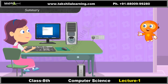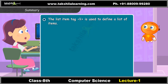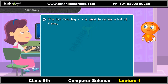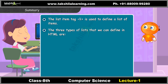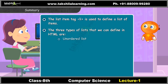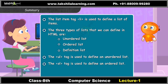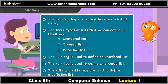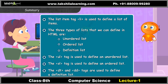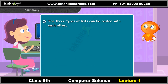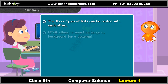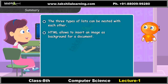Let's summarize what we learned in this unit. The list item tag LI is used to define a list of items. The three types of lists we can define in HTML are: unordered list, ordered list, and definition list. The UL tag is used to define an unordered list, the OL tag is used to define an ordered list, and the DT and DD tags are used to define a definition list. The three types of lists can be nested with each other. HTML also allows you to insert an image as a background for a document.